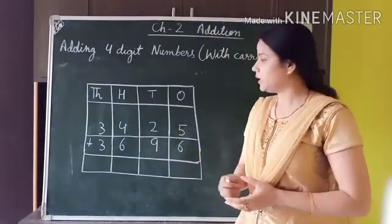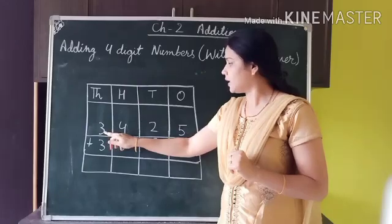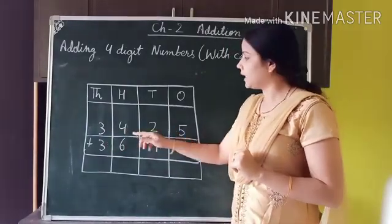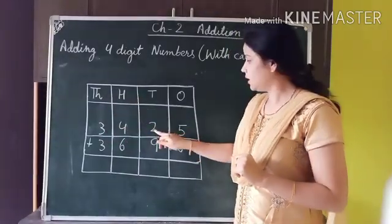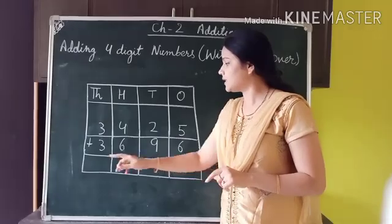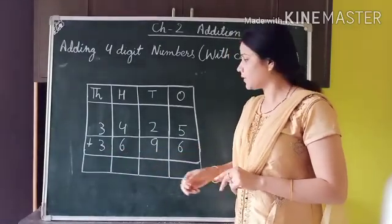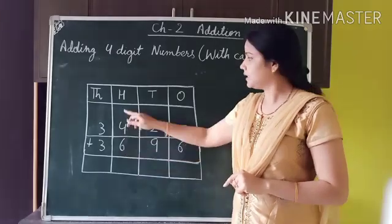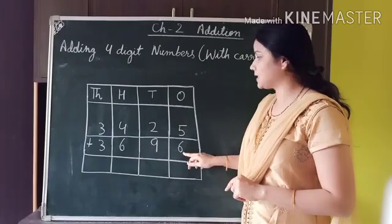Let us start with an example. Here I have taken two different four-digit numbers. The first number is 3425 — in this, 3 is thousands, 4 is hundreds, 2 is tens, and 5 is ones. The second number is 3696 — in this, 3 is thousands, 6 is hundreds, 9 is tens, and 6 is ones.